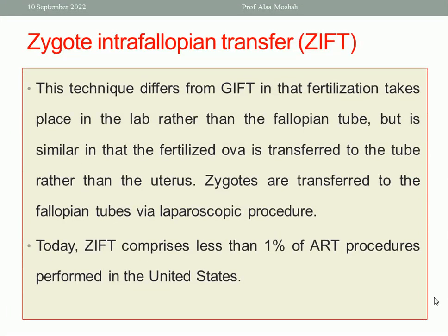Zygote intrafallopian transfer (ZIFT) differs from GIFT in that fertilization takes place in the lab rather than the fallopian tube, but it is similar in that the fertilized ovum is transferred to the tube rather than the uterus. Zygotes are transferred to the fallopian tube via laparoscopy. Today, ZIFT comprises less than 1% of ART procedures performed in the United States, and both GIFT and ZIFT are declining significantly.